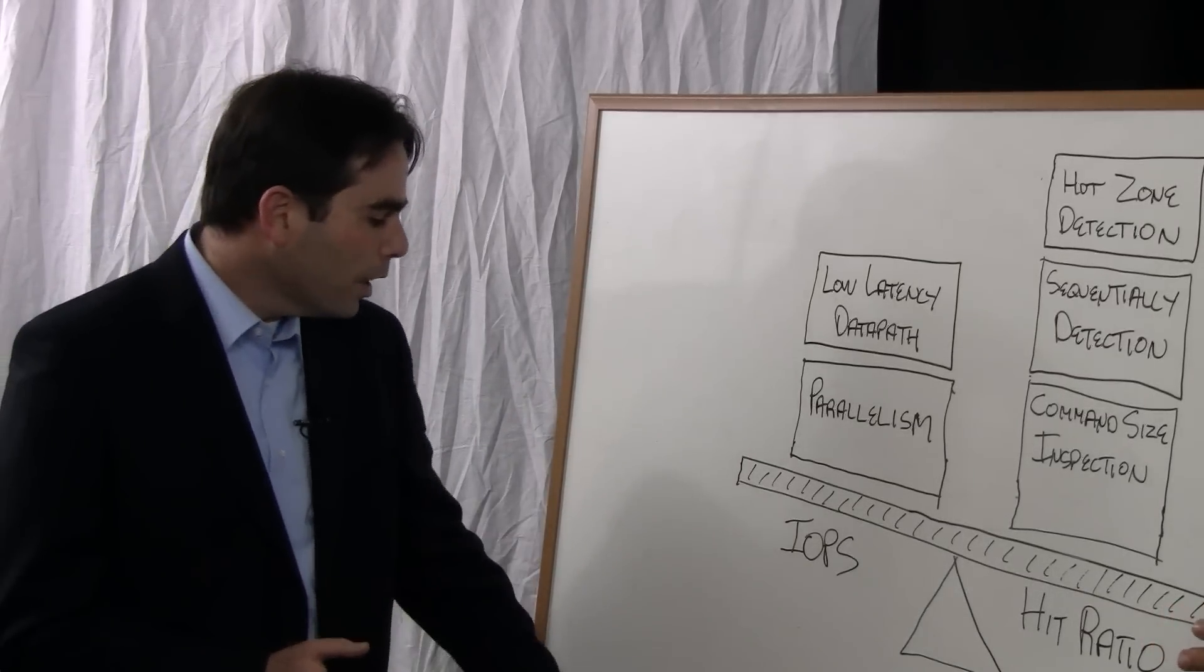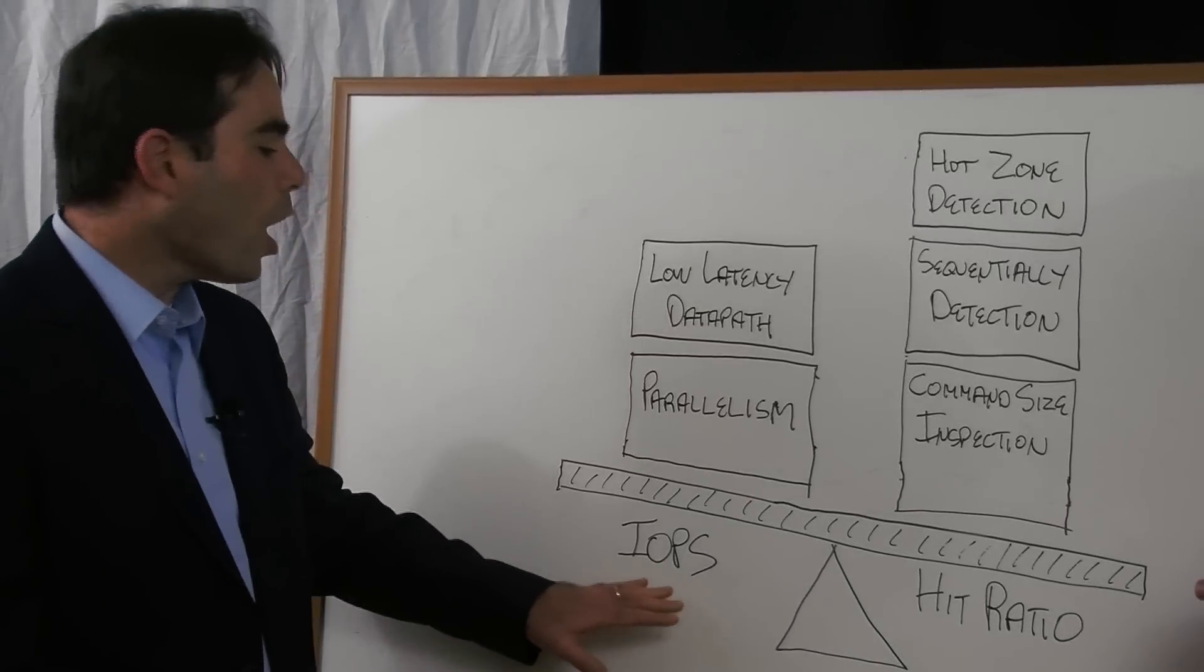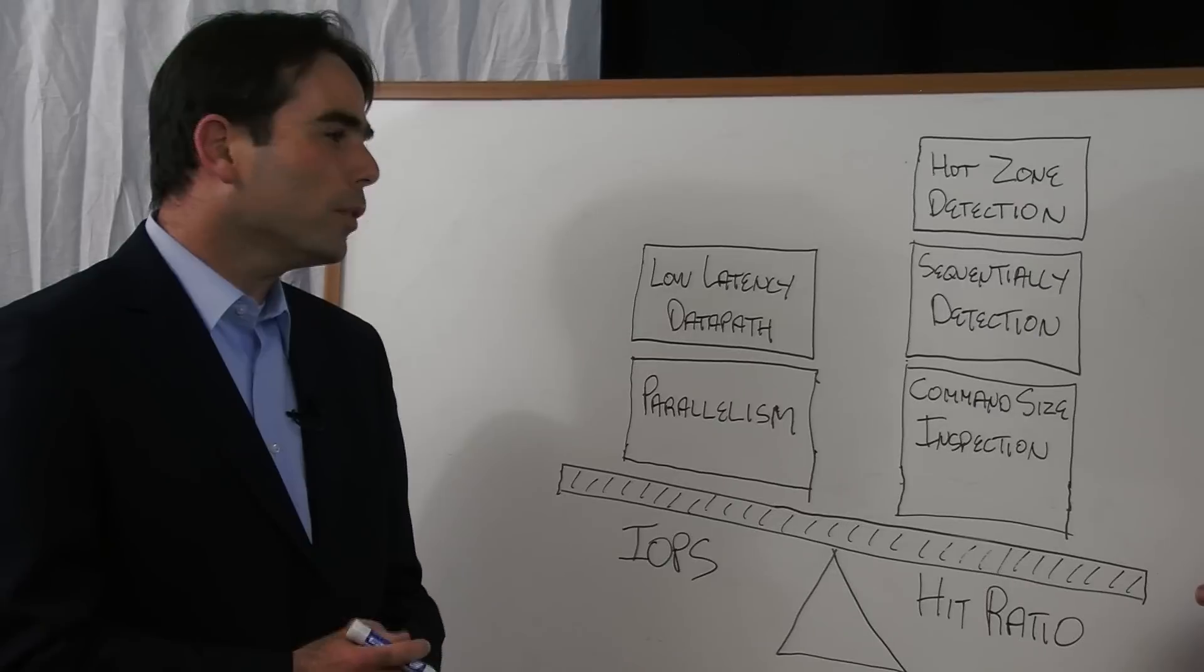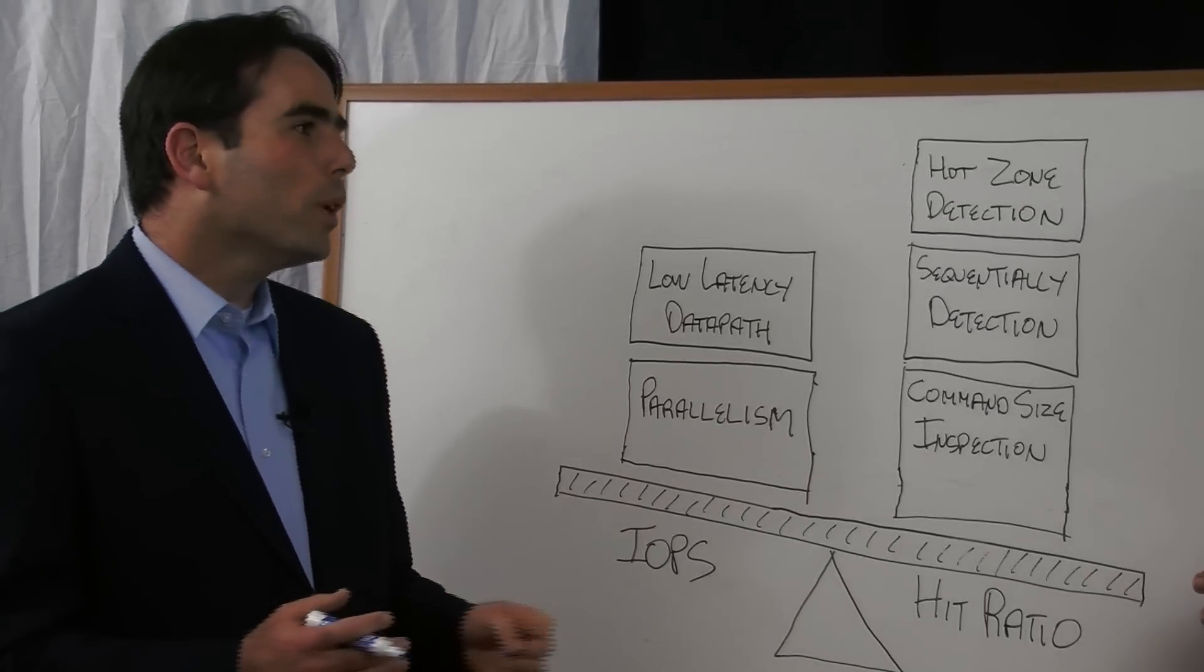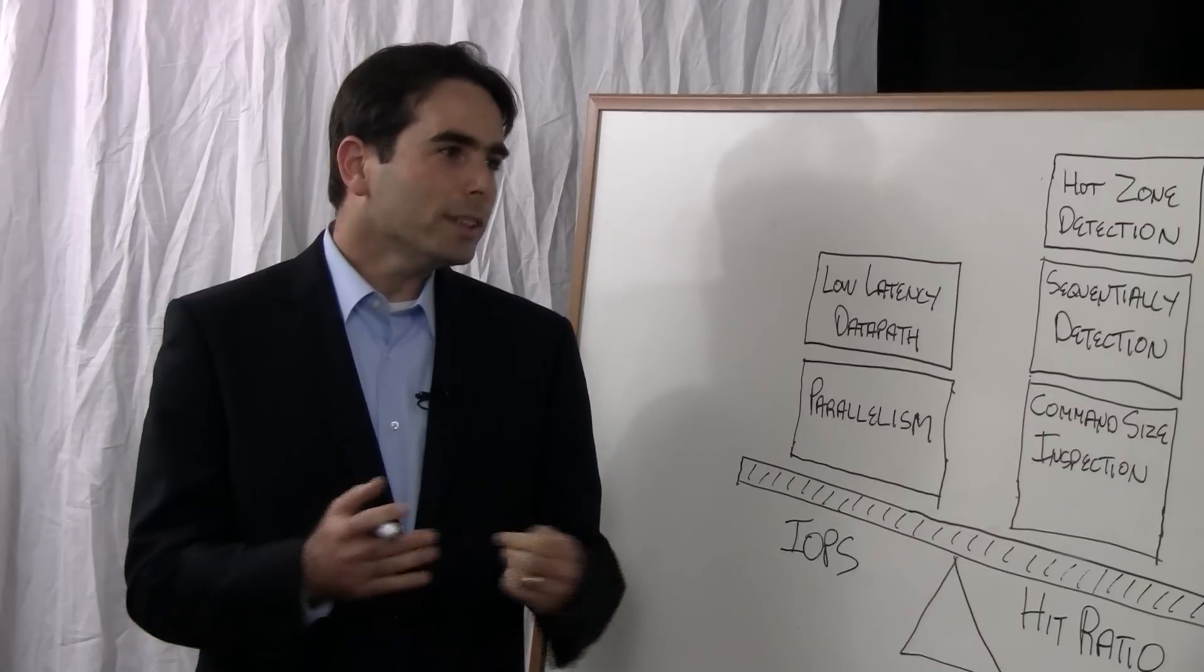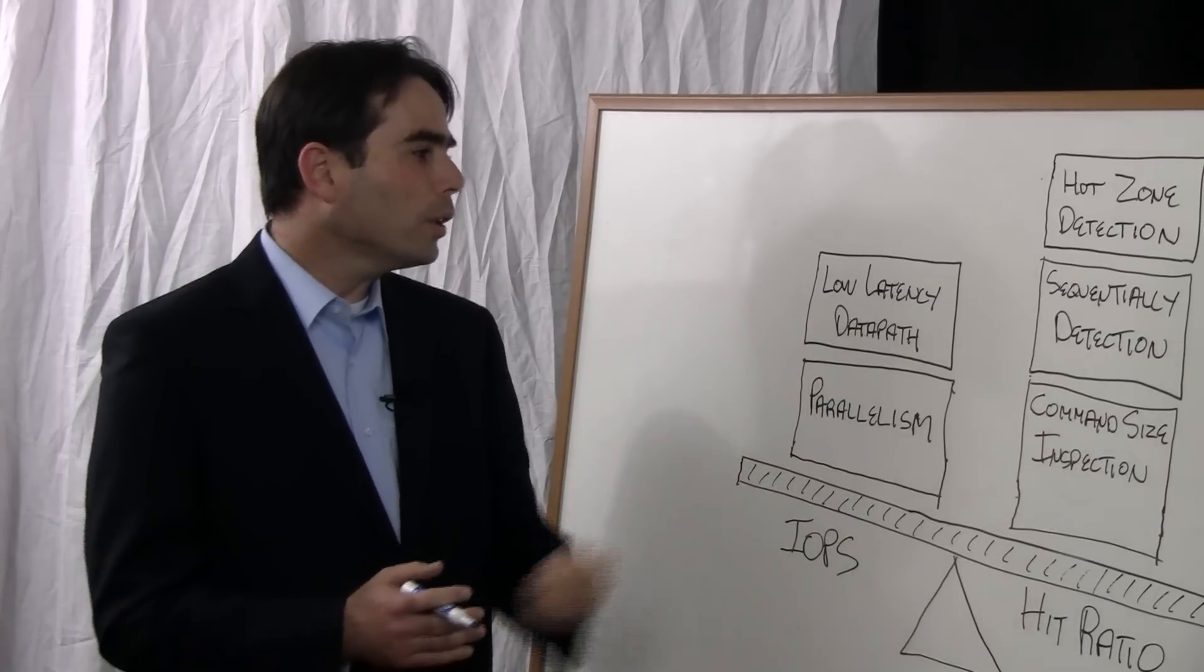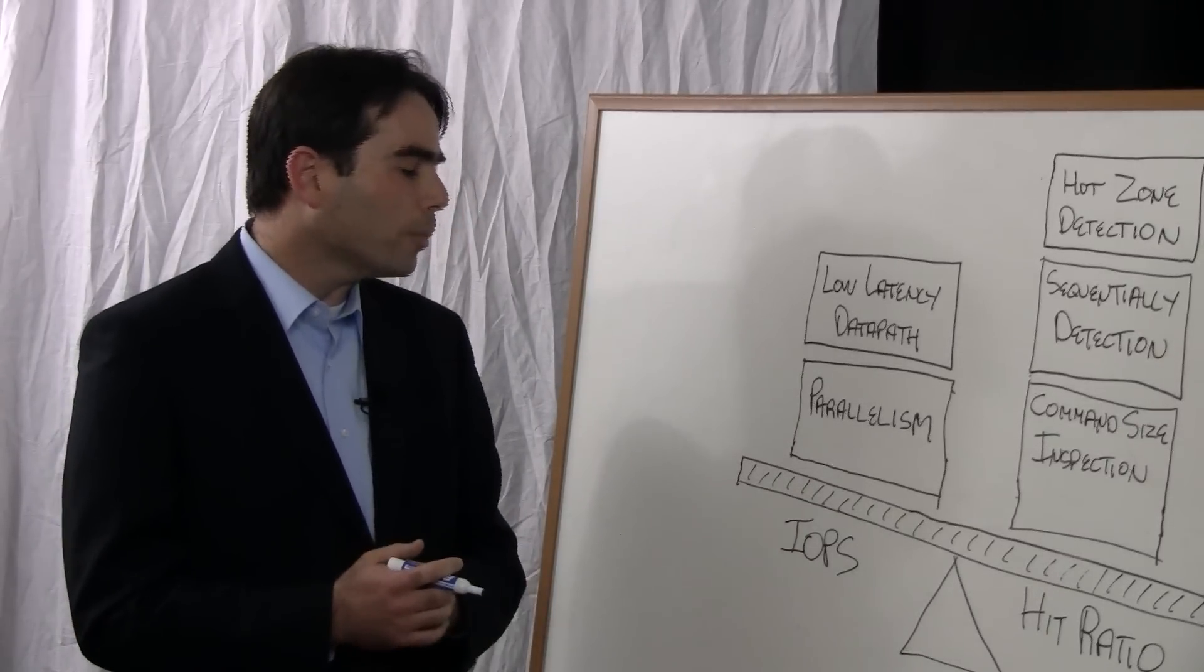From the hardware perspective, you really want to make things happen as fast as possible and get as much IOPS as possible into the flash and from the flash to the application. To do that, you want your latency to be as low as possible, so things are getting answered real quickly. You also want parallelism. You want to make sure that if you have multiple applications such as in a virtualization environment or in a large database, all of that can happen at once. The higher your parallelism and the lower your latency, the better your hardware aspects of the flash are because you're getting more IOPS out there.